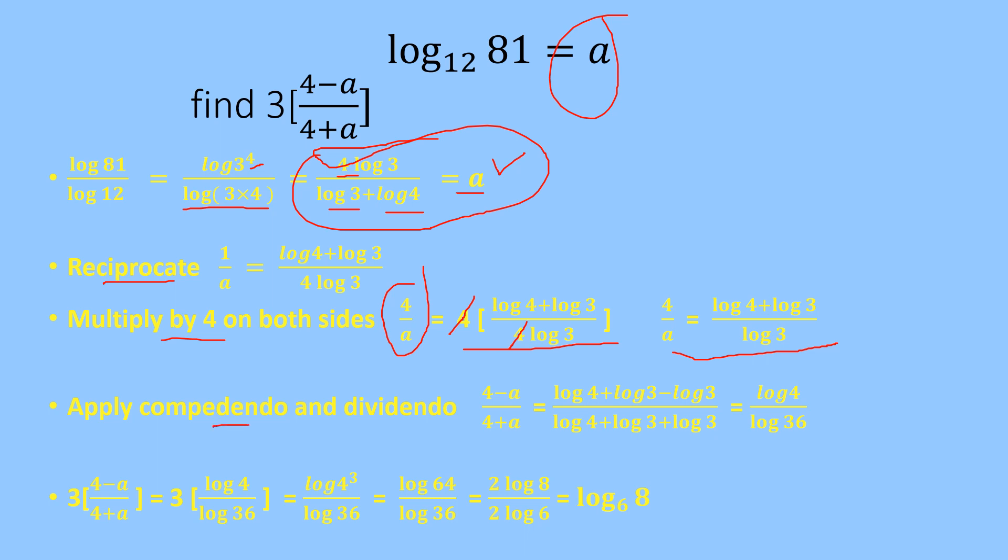Apply componendo and dividendo rule to this equation. We get 4 minus a upon 4 plus a equals log of 4 plus log of 3 minus log of 3 upon log of 4 plus log of 3 plus log of 3. Log 3 minus log 3 gets cancelled out and we are left with log of 4 in the numerator and log of 36 in the denominator.